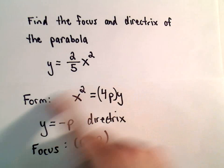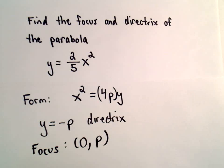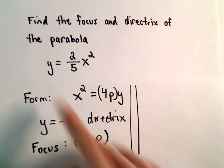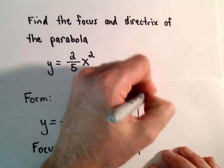So again, I'm just trying to rewrite it in this form, and then hopefully it'll be a little bit more useful. Okay, so let's try to do this. Okay, so we've got y equals two-fifths times x squared.